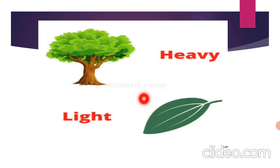So you all understood? Yes, the tree is heavy because the tree has roots, branches, stem, fruits, flowers, and leaves. Only one leaf it is, and so the leaf is light and tree is heavy. Very good.